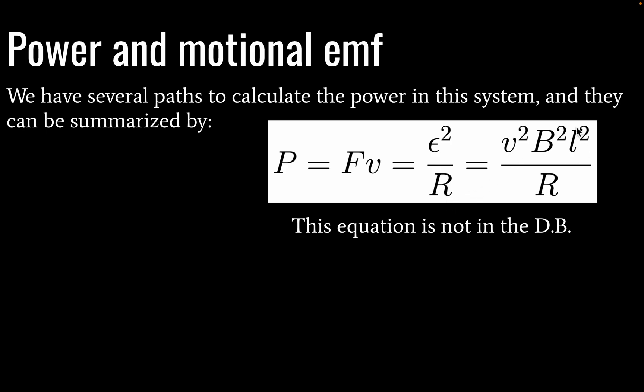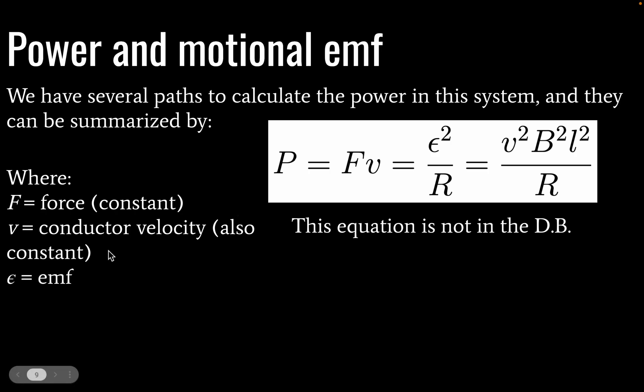And this then is going to give our this is new where EMF squared will be equal to velocity squared times magnetic field strength squared times the length of our wire squared divided by the resistance in our circuit. So this is not in the data booklet, but you may find it to be handy. And again, just defining all of our variables.